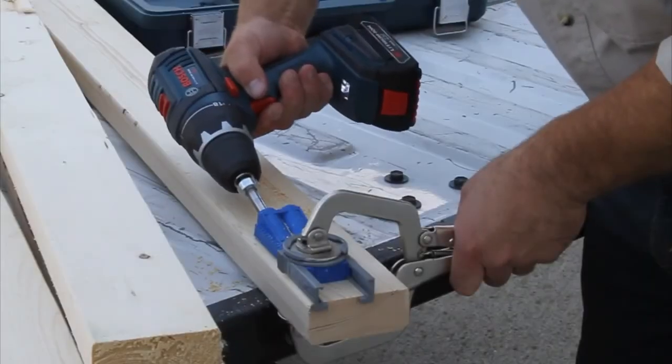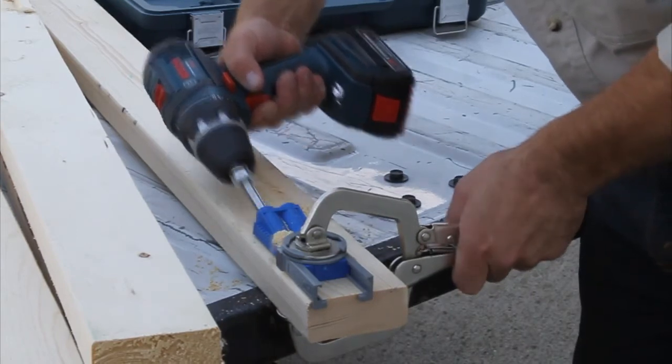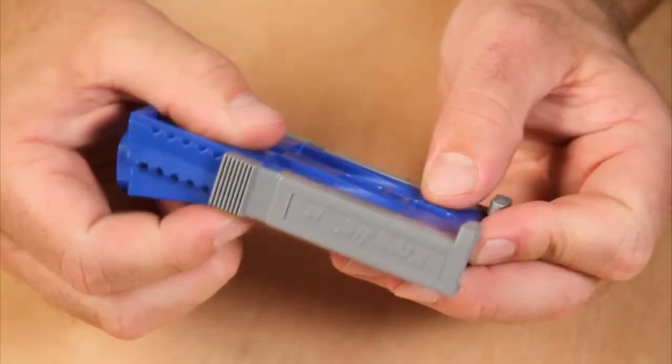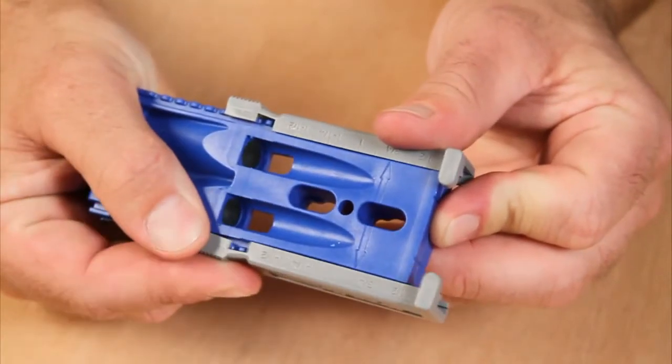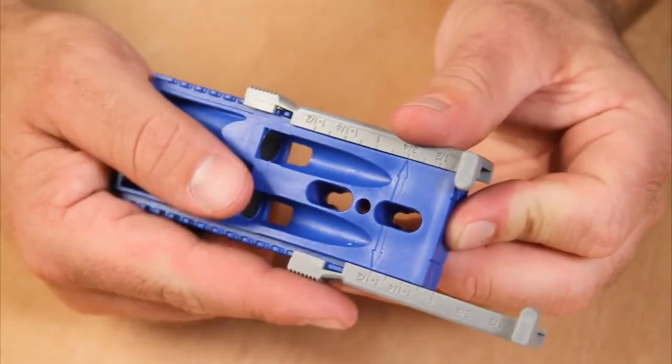The independent easy-press positioning sliders allow the jig to quickly be adjusted in nine separate settings to ensure perfect screw placement in stock from half-inch to 1.5-inch thick.